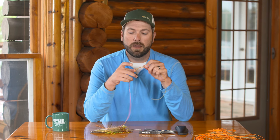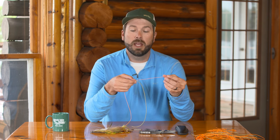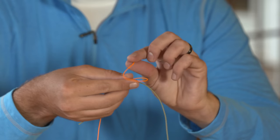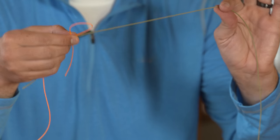Once I snug that knot up, I then take my class tippet and I'm going to do a simple overhand knot, but I'm going to go around my shock tippet.